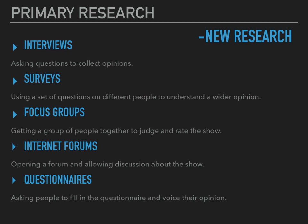Moving on to primary research — this is research that you've collected yourself, so it can be called new research. Ways of doing this include interviews: you get somebody, ask them a question, and it can be an open question, meaning they can answer whatever they want in full sentences. This is great because it gives you a more detailed idea of their opinion, but it's harder to compare to others. Whereas a closed question would be yes or no, or giving them a limited option of choices to tick, which is good because it allows you to compare, but it has its limits and can't tell you everything.